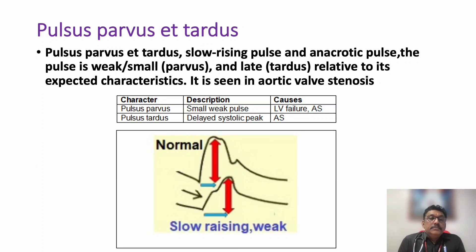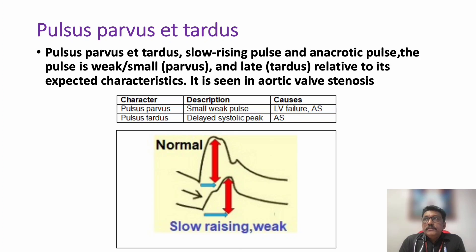Pulsus parvus means a small, weak pulse. Pulsus tardus means delayed systolic peak — a classical finding in aortic stenosis, because during left ventricular systole there is a delay in the opening of the stenosed aortic valve. The pulse volume is always low because of the fixed cardiac output. Together, these produce pulsus parvus et tardus — low volume, slow-rising pulse.